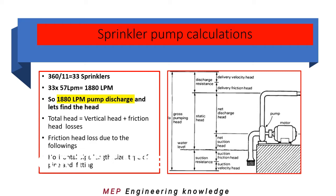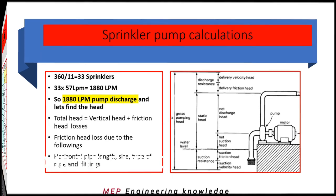Now let us find the head for the pump. The total head is the summation of vertical head and friction head losses. Vertical head is the vertical height of the pipe. Friction loss is arrived at by the summation of horizontal length, pipe size, pipe type, and fittings, by referring the chart attached here. Using the chart, we can convert the losses in fittings into equivalent pipe length, and thereby arrive at the total head easily.